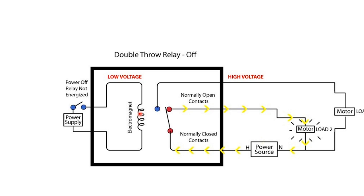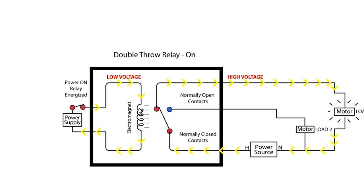If we apply power to the coil, you can see that we now have power running through the normally open side of the relay. However, we have now lost power to the normally closed side of the relay.